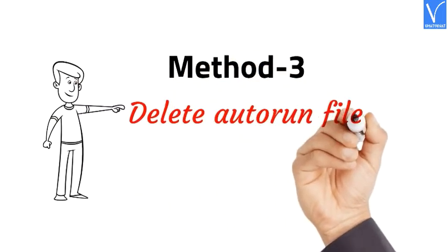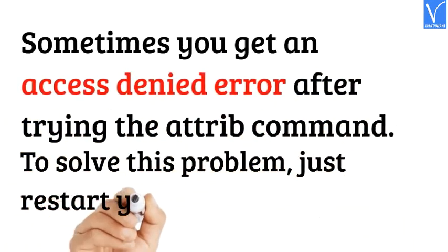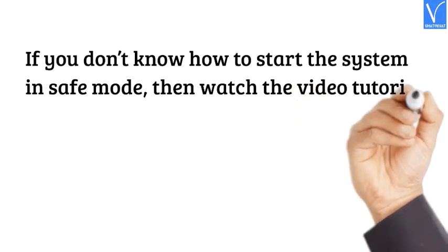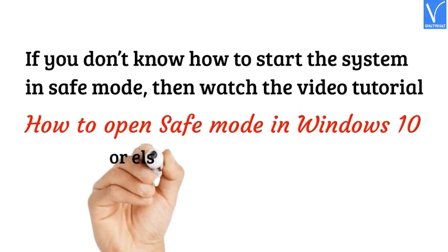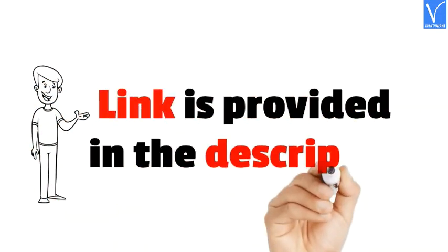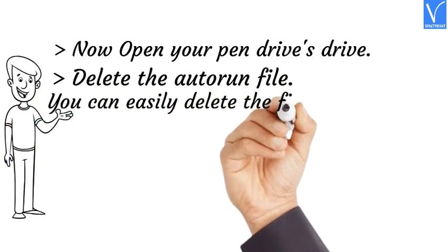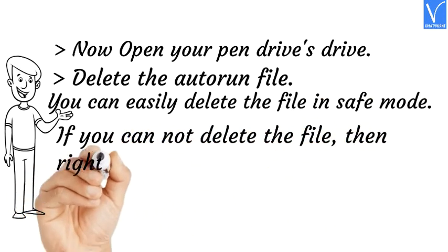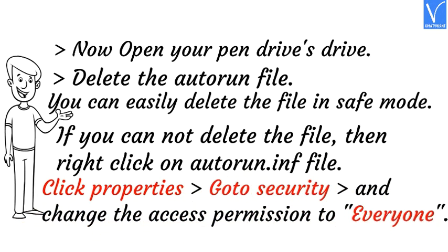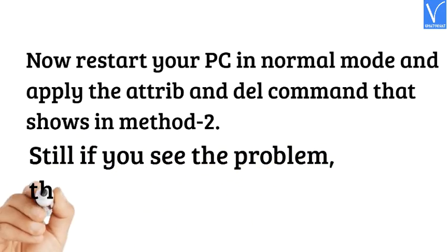Method 3: Delete autorun files in Safe Mode. Sometimes you get an access denied error after trying the ATTRIB command. To solve this, restart your system in safe mode. If you don't know how to start in safe mode, watch the video tutorial 'How to Open Safe Mode in Windows 10', or visit our article 'How to Get into Safe Mode in Windows XP, Vista, 7, 8, 8.1 and 10' — the link is in the description. Now open your pen drive and delete the autorun file, which you can easily do in safe mode. If you still cannot delete it, right-click the autorun.inf file, click Properties, go to Security, and change the access permission to everyone. Then restart your PC in normal mode and apply the ATTRIB and DEL commands shown in Method 2.